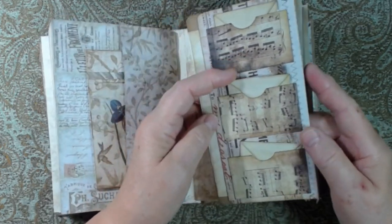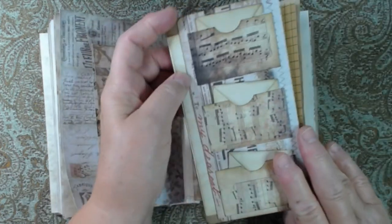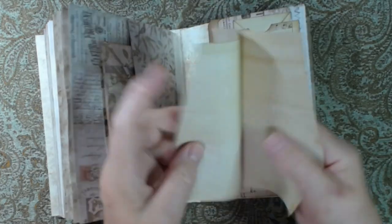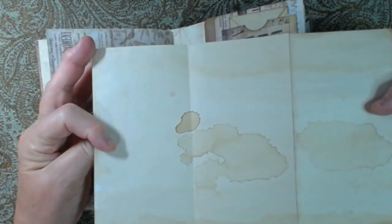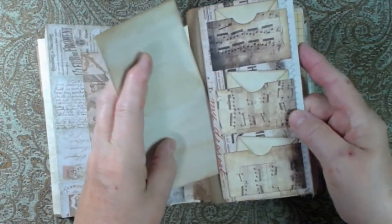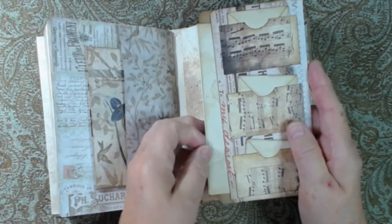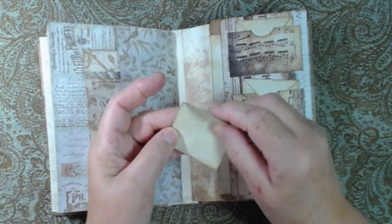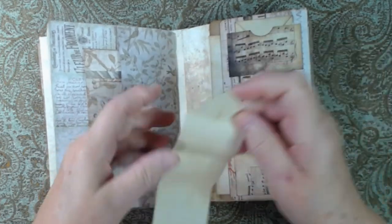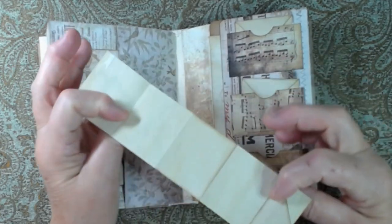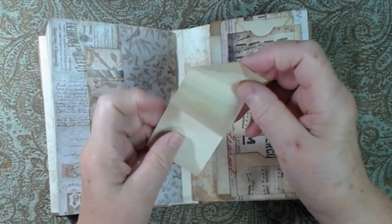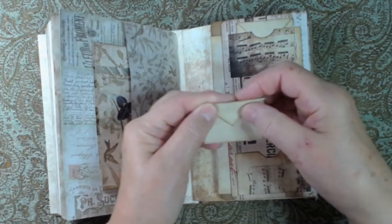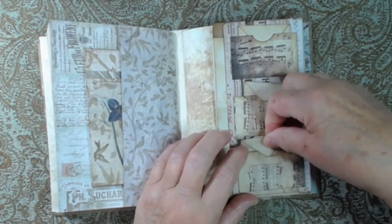On this little flap, there's a pocket behind with a journaling paper. And then in each one of these little music pockets, there's another little journaling page that's just folded to look like an envelope. And they tuck right inside the little pockets.